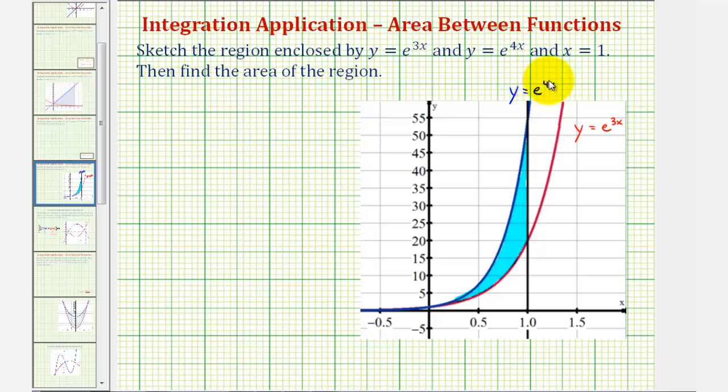Notice on the left they intersect when x equals 0 and on the right we're told x equals 1. So we're looking for the area of this shaded region here.